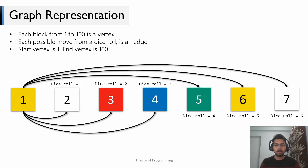So how do we represent this in the form of a graph? Well, each block you can stand on will be a vertex. So each block from 1 to 100 is a vertex in the graph and each possible move you can make is an edge. If you consider the figure below, let's say you're at block number 1. You can make six possible moves depending on the outcome of your dice roll. If the outcome is 1 you move to block 2, if the outcome is 2 you move to block 3, and so on. So you have six edges coming out of block 1.